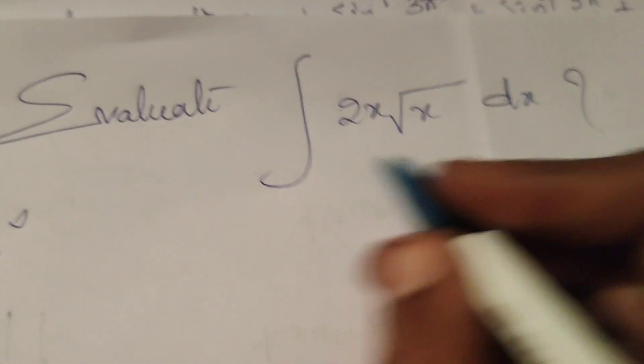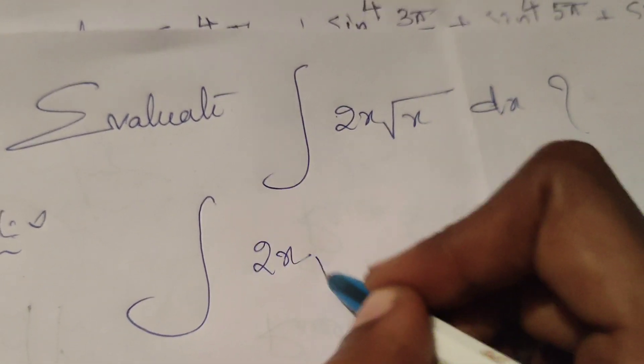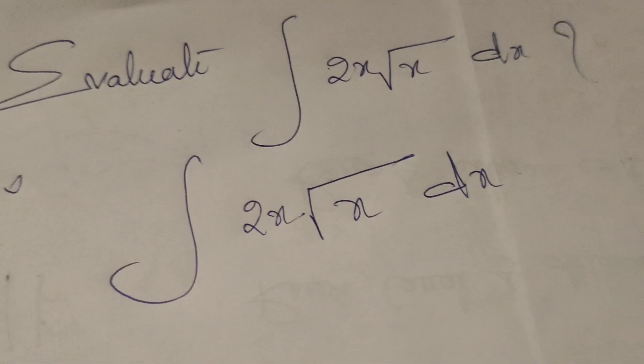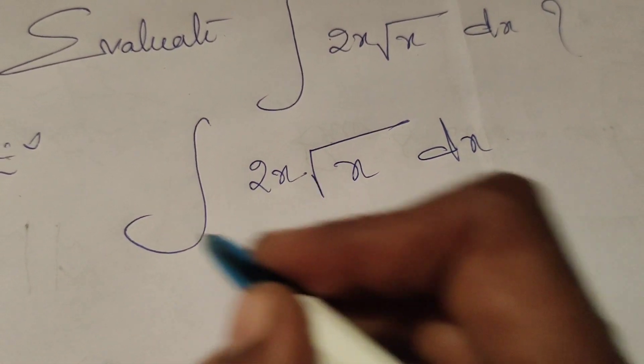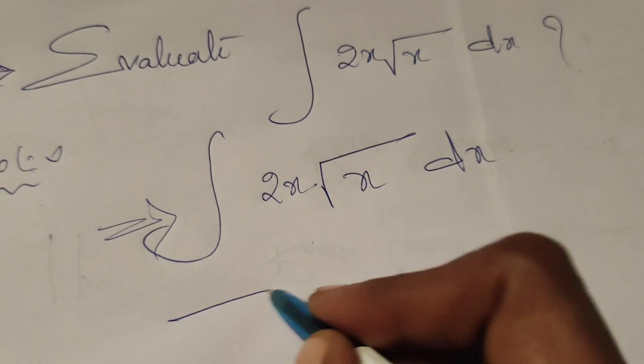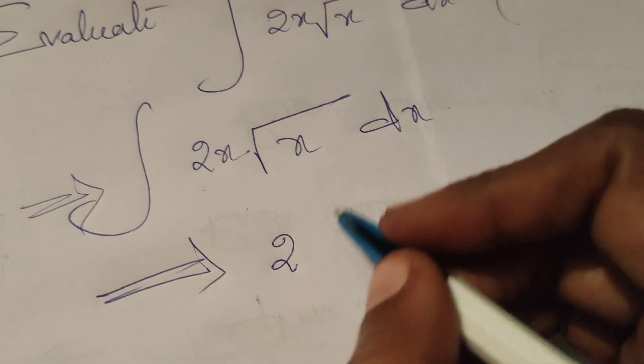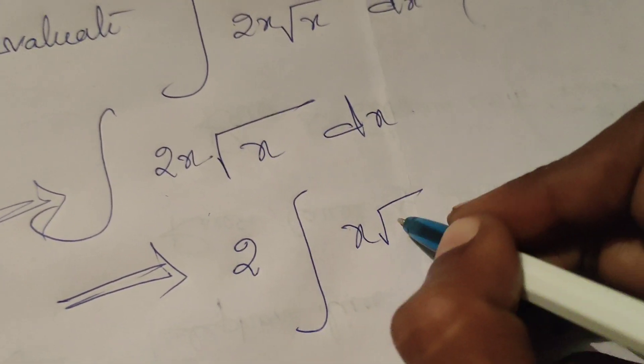Here write once again the given problem. 2x integral of 2x root x dx. Now in this integral write that implies here 2 is the constant. So write before the integral. Integral of x root x dx.